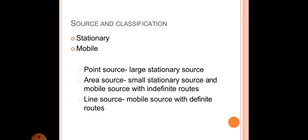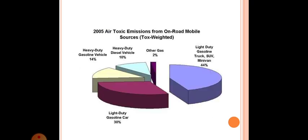Source and classification: Stationary, mobile. Point source: large stationary source. Area source: small stationary source and mobile source with indefinite routes. Line source: mobile source with definite routes.